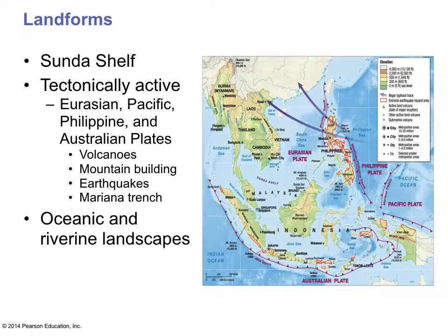Because of the plate tectonic situation in the area, with all the plates converging — the Eurasian plate, the Philippine plate, the Pacific plate, and the Australian plate — this creates a very active region for volcanoes, mountains, and earthquakes. As a result of the volcanoes, earthquakes, and mountain building, it produces a lot of geological instability.